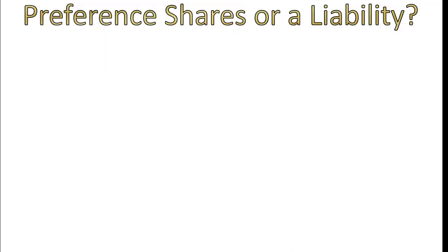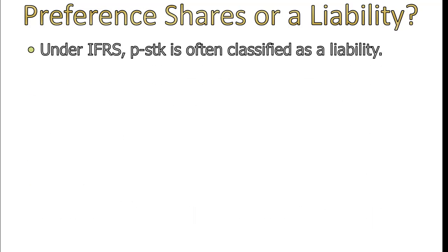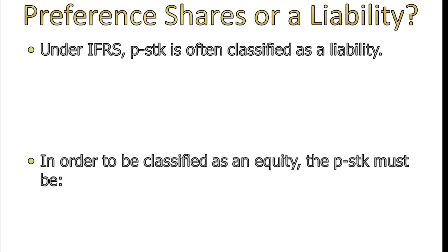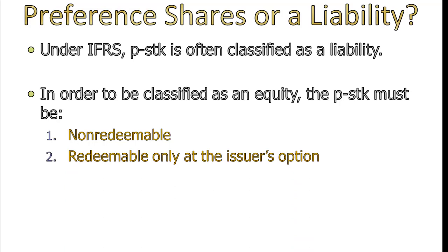Under IFRS the classification is a little bit different — they usually end up classifying preferred stock as a liability even though it's a form of stock. IFRS has two specific rules: in order to be classified as equity, the preferred stock has to be either non-redeemable, meaning you can't ever go back to the company and demand your par value back, or it has to be redeemable only at the issuer's option. So if you own 10,000 shares of my preferred stock and you come in saying 'I want my money,' I can say no. But if I choose later to redeem them, I can call you and say I'll buy back 5,000 of those shares. If it's non-redeemable or only redeemable at the company's choice, you can call that preferred stock an equity.